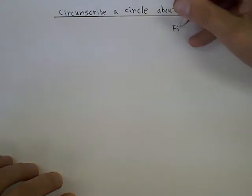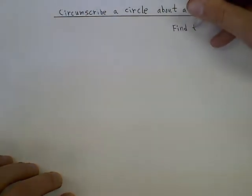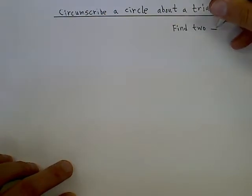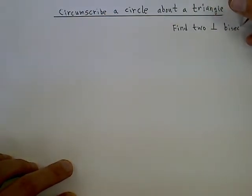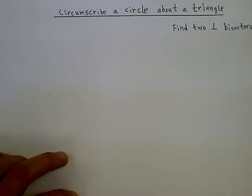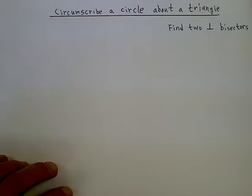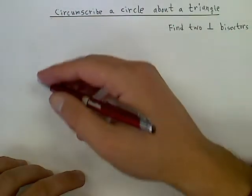We need to find two perpendicular bisectors. Okay, let's start off with finding our triangle.